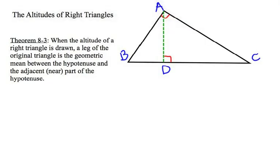Theorem 8-3 says, when the altitude of a right triangle is drawn, the leg of the original triangle is the geometric mean between the hypotenuse and the adjacent, or the near part, of the hypotenuse.